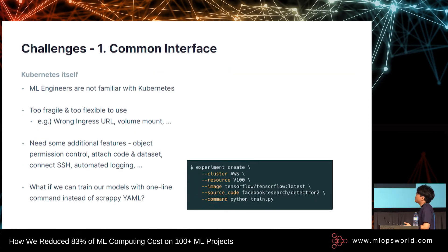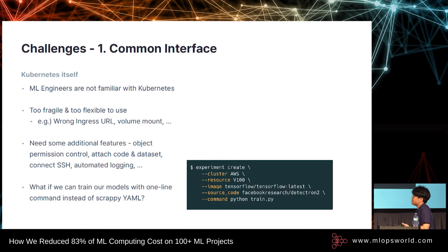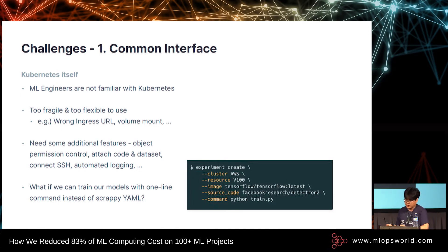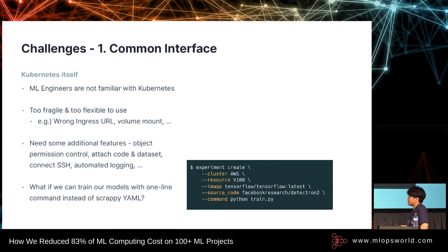This is how we build the hybrid cluster or multi-cloud infrastructure, and there are some challenges. The first challenge is Kubernetes itself. Most machine learning engineers are not familiar with Kubernetes, and they occasionally fail to set up the workload. It's not just that they aren't expert on Kubernetes — there are also many latent policies for each team, such as how to mount the volume, what is the dataset ID, what is the volume ID, or how to create an ingress URL. Also, ML teams need additional features like object permission control, attachment of code and datasets, connection via SSH, or automatic logging.